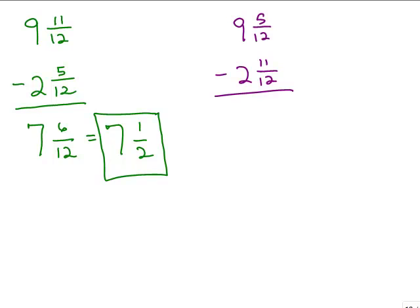So here's a little preview of how you could do that. You could change each of these to improper fractions and at least they have a common denominator. So we have 12 times 9, that's 108 plus 5 is 113. So you have to do that multiplication and addition. And then we're going to subtract 12 times 2, 24 plus 11 is 35.